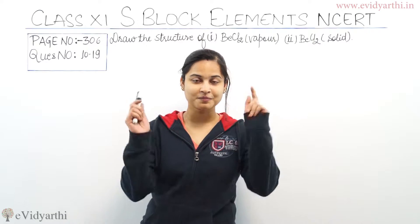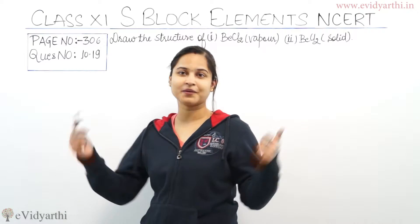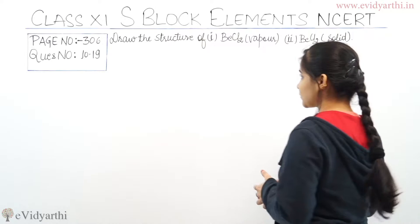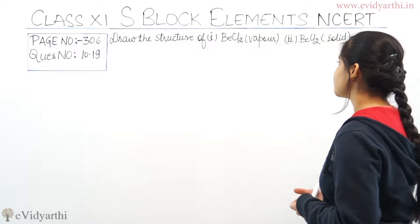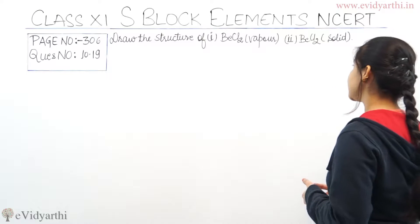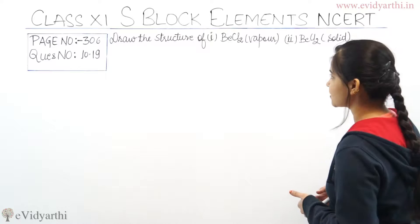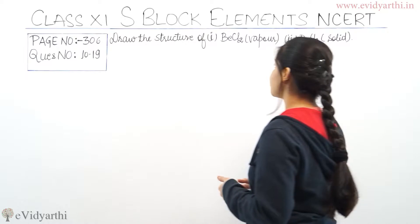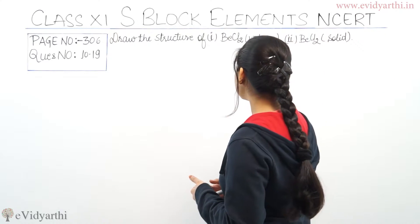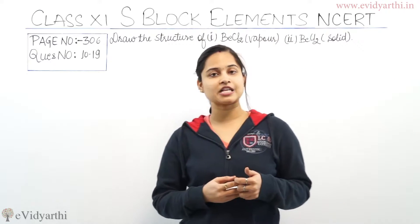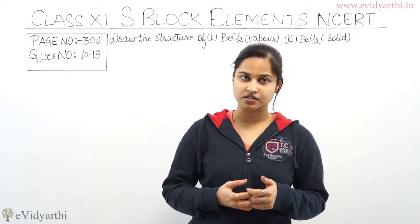Let's move on to the question now. The question is: draw the structure of, first, BeCl₂ in vapor state, and second, BeCl₂ in solid state. So I have to draw the structure of Beryllium Chloride in vapor as well as in solid state.